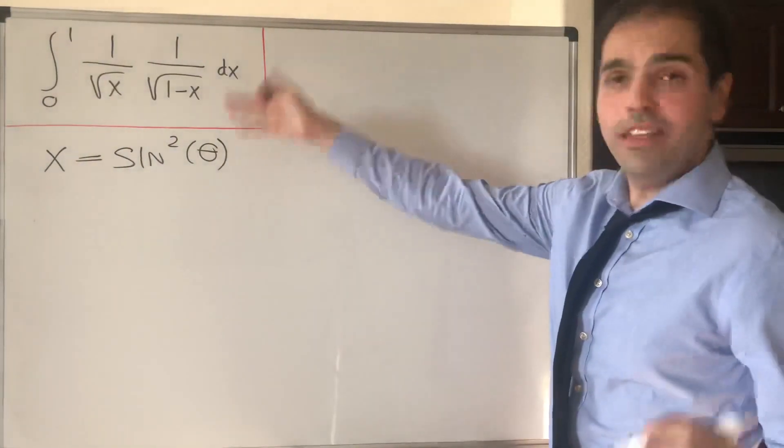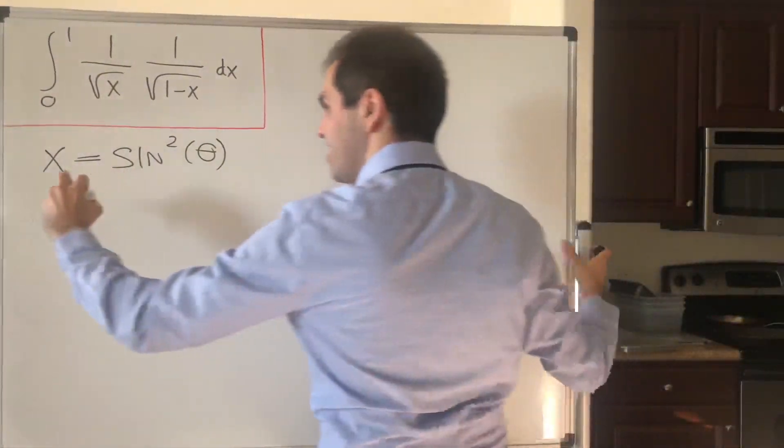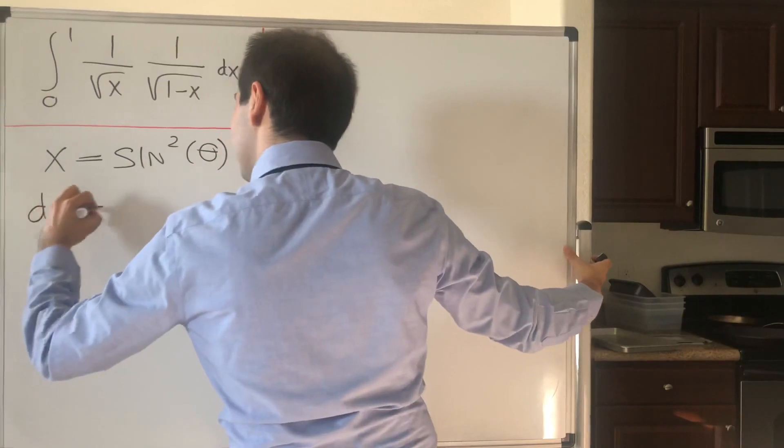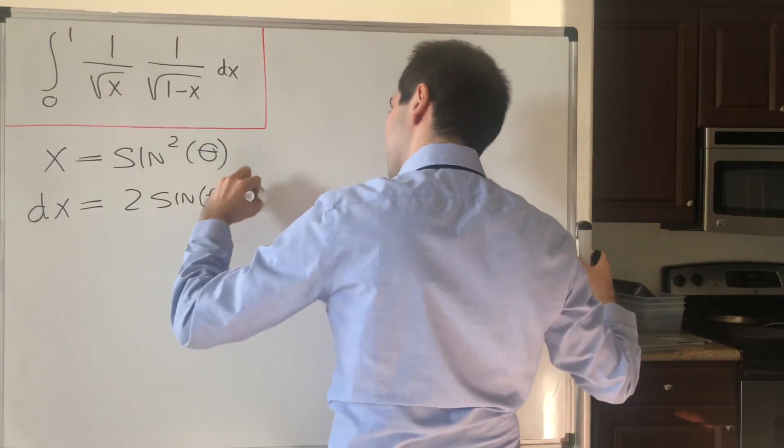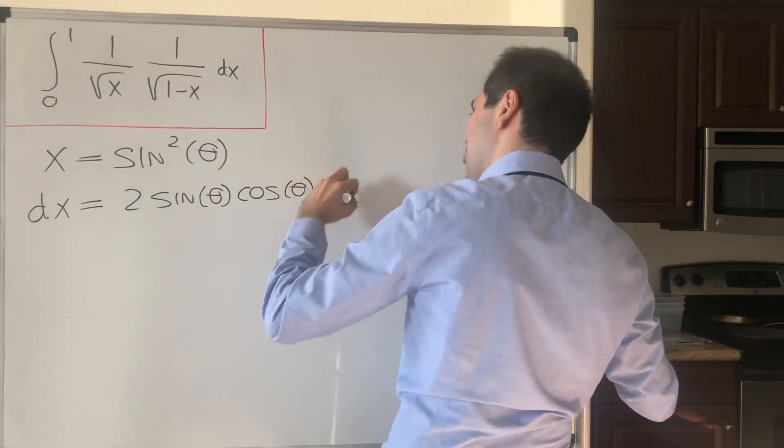Then, what happens? Let's calculate dx. dx just becomes 2 sine of theta cosine theta, so just the usual chain rule.